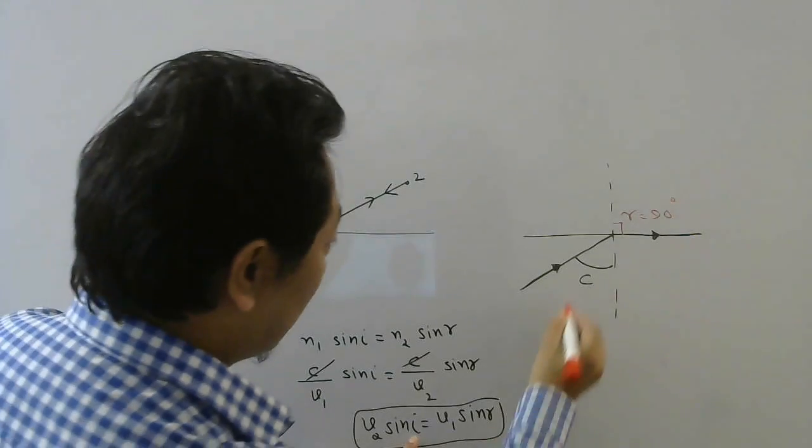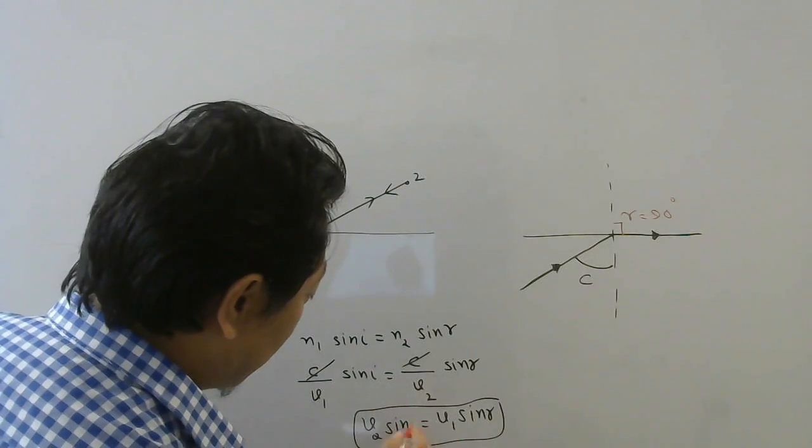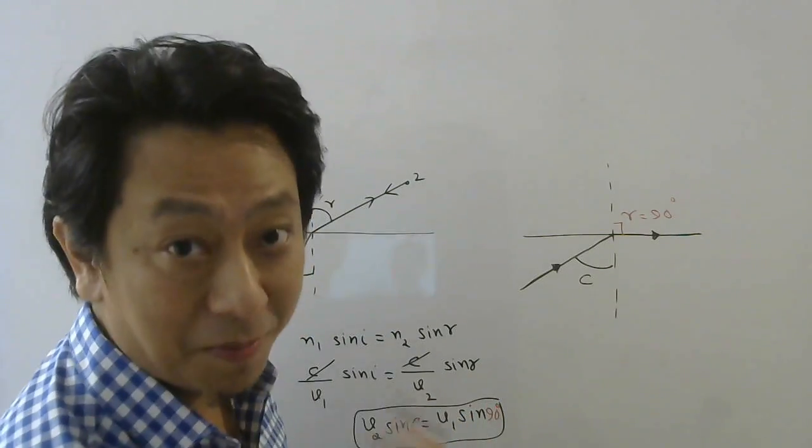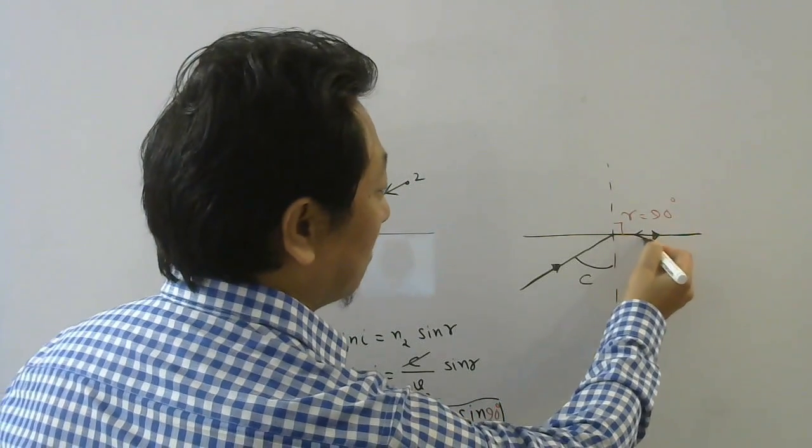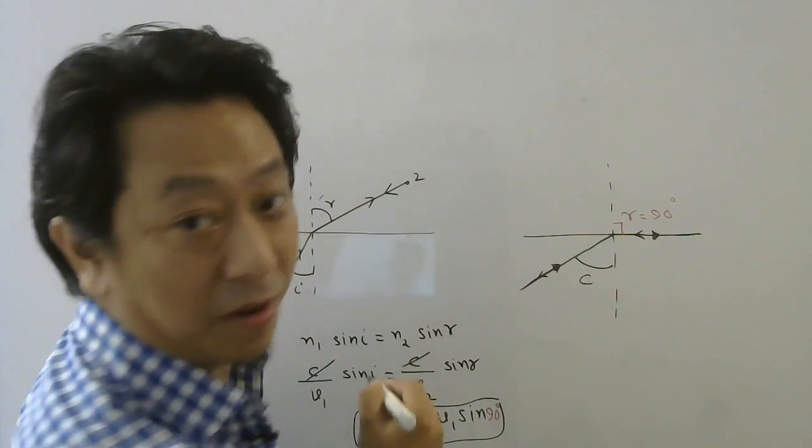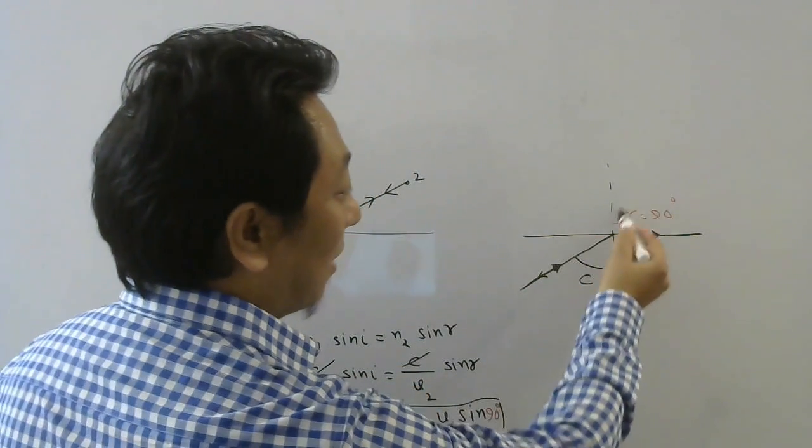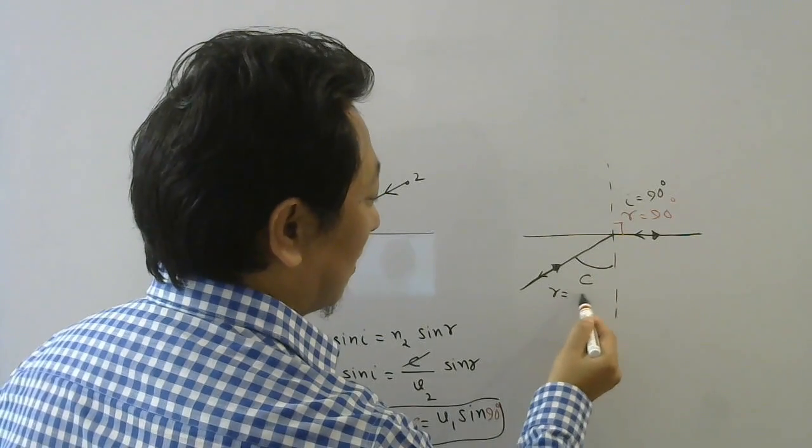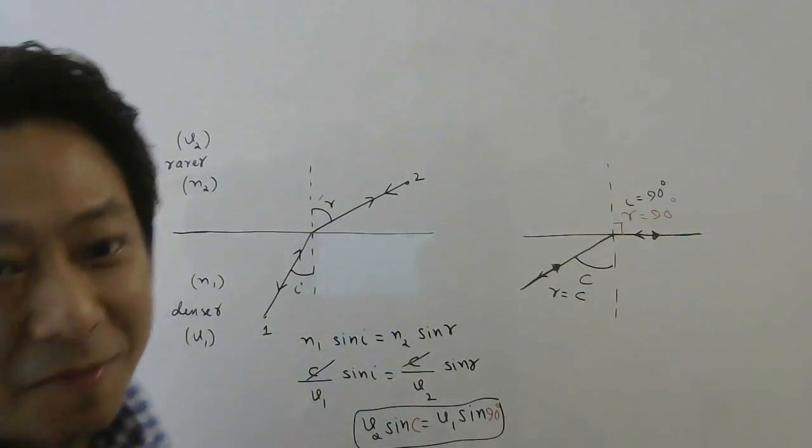When i is c, if I replace here by c, your r will be 90 degree. Remember light follows reversibility principle. Therefore, if i is 90 degree, r will be c. Keep that in mind.